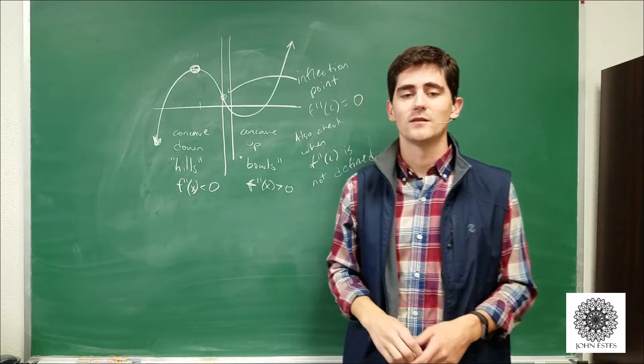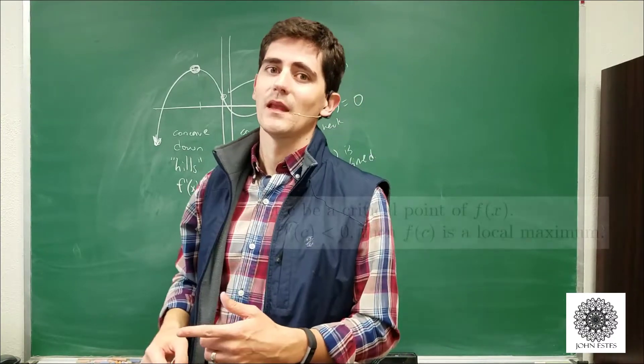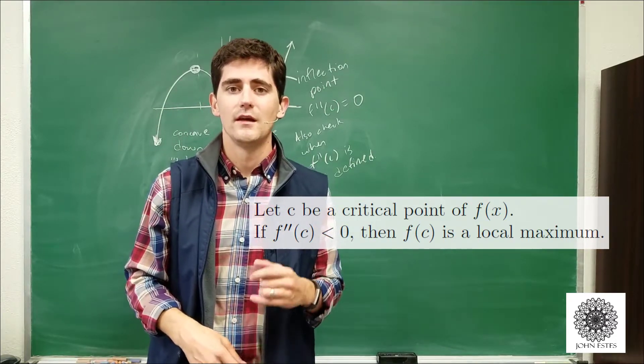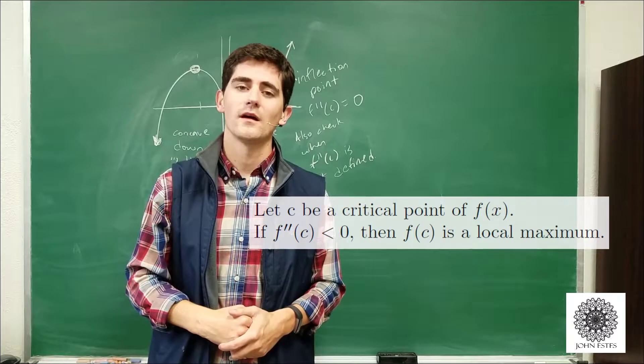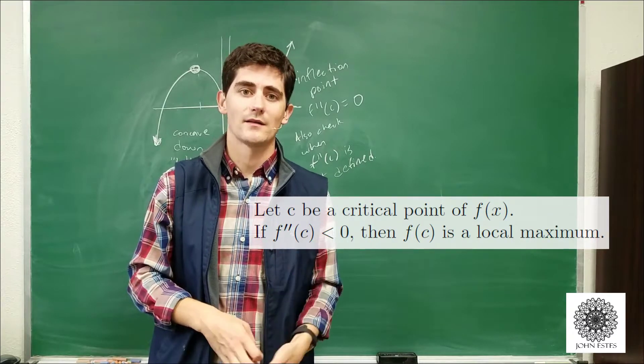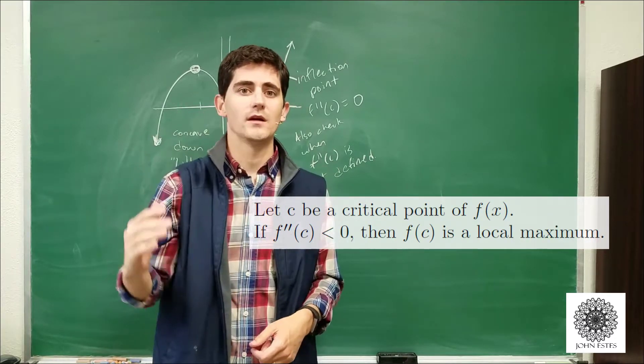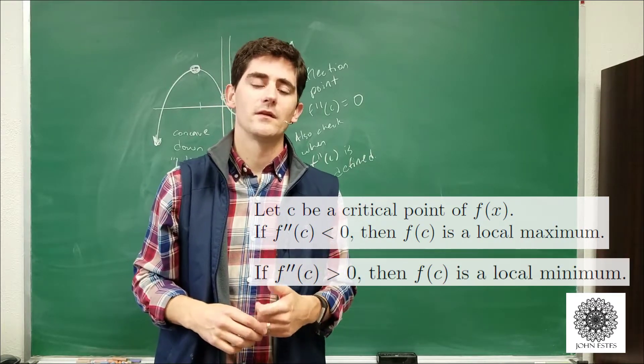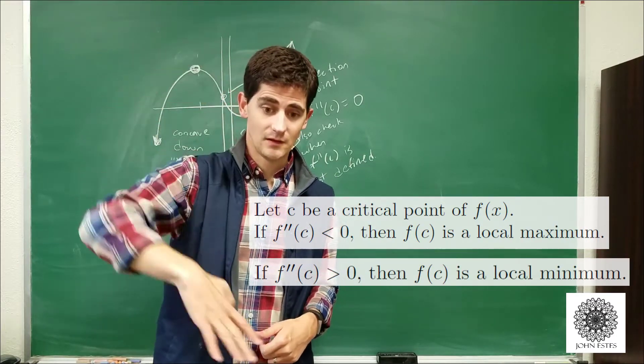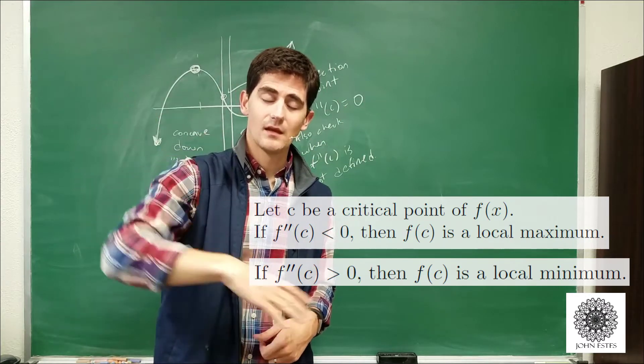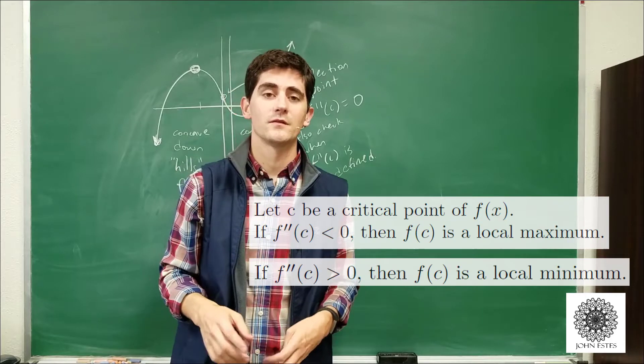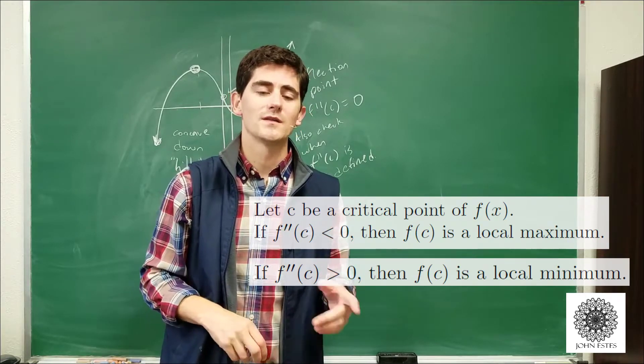max. So the second derivative test says that if you have a critical point c and f''(c) is negative at c, then you have a local max because your concavity is bowing up. If you have a critical point and your second derivative is positive, meaning you're concave up like this, then you're gonna have a local min. That's an alternative version of determining local extrema using the second derivative instead of